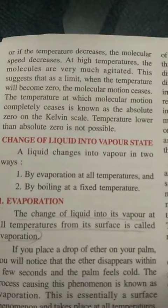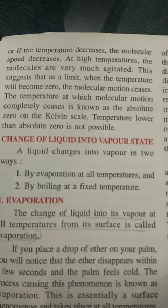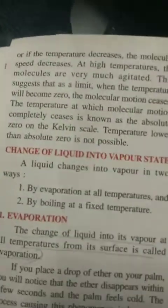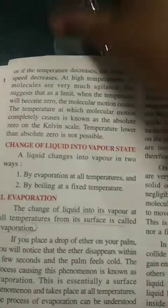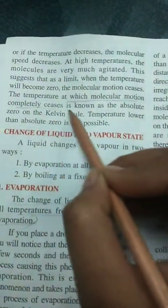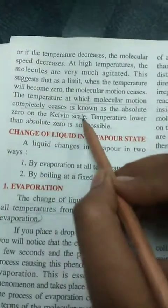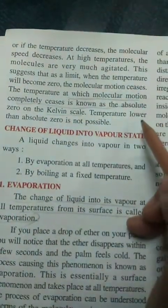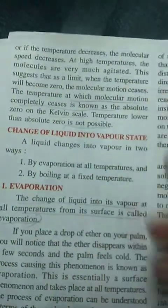The temperature at which molecular motion completely ceases is known as absolute zero, or the Kelvin scale. A temperature lower than absolute zero is not possible.